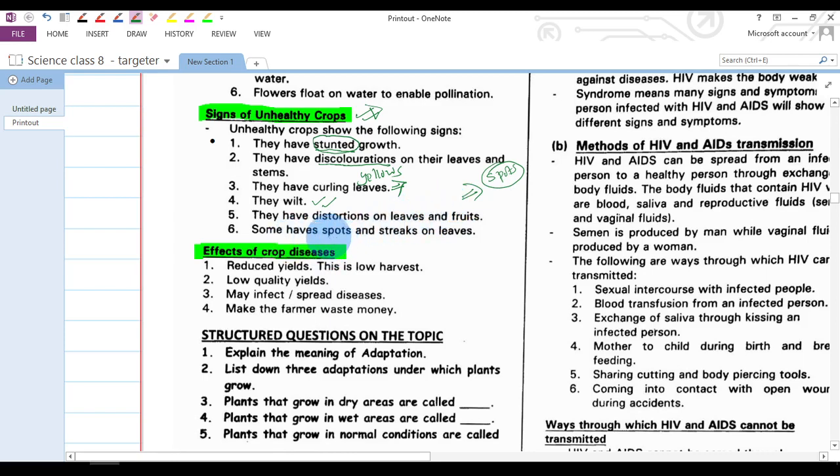We have effects of crop diseases. Effect means what is the impact of the crop diseases on the plant. One: reduced yields. You can find that maybe a farmer has planted maize in one acre but is harvesting just two sacks of maize. That is the meaning of low yields. If those plants or maize were attacked by the crop diseases, we shall experience reduced yields. That is zero harvest.